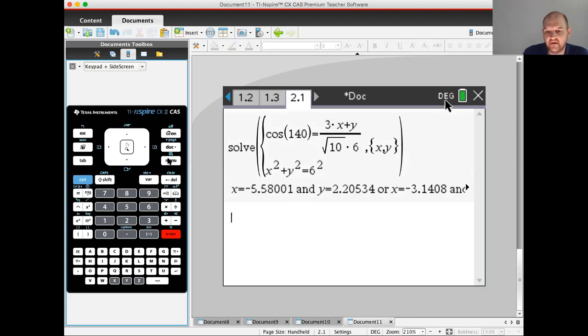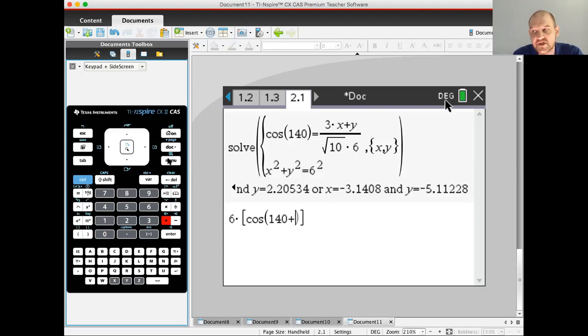Or negative 3.141, negative 5.112. Okay. So I think those are my answers. So now let me try it the other way. The other way I was thinking of doing, it was like six times, cosine of 140 plus. So I'm going to use arctan of one third. And the reason I'm using that is because the vector is (3,1). So inverse tangent of one over three would be its direction angle. So this should, I think this should work. Sine of 140. I should have made this here.